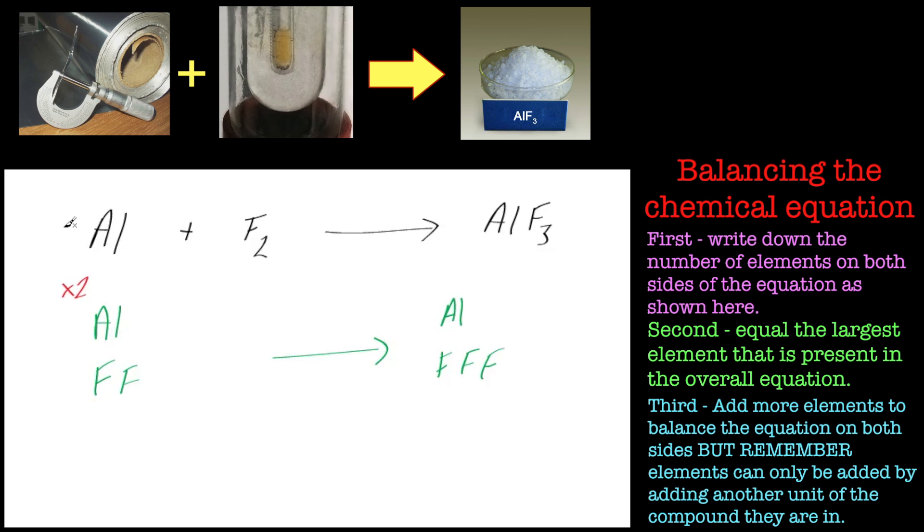So two aluminums, two fluorine molecules, and that should give us two of them. Actually I got that wrong. I'm hoping you spotted that deliberate mistake there. There'll be three there, won't it? That's the whole point of doubling it up so we can get the three there.